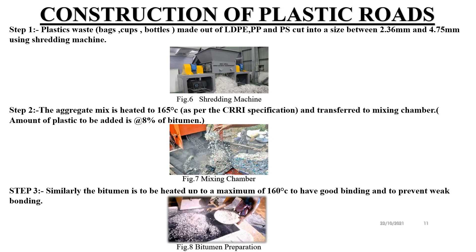In the construction process, plastic waste made of low-density polyethylene, polypropylene, and polystyrene is cut into a size of between 2.36 mm and 4.75 mm using a shredding machine. The aggregate mix is heated to 165 degrees Celsius as per CRRI specification and transferred to the mixing chamber. The amount of plastic added is around 8% of bitumen, though at some places 6% is preferred in hill areas so that leaching and skid resistance can be increased. The bitumen is heated up to a maximum of 160 degrees Celsius to ensure good binding and to prevent weak bonding.